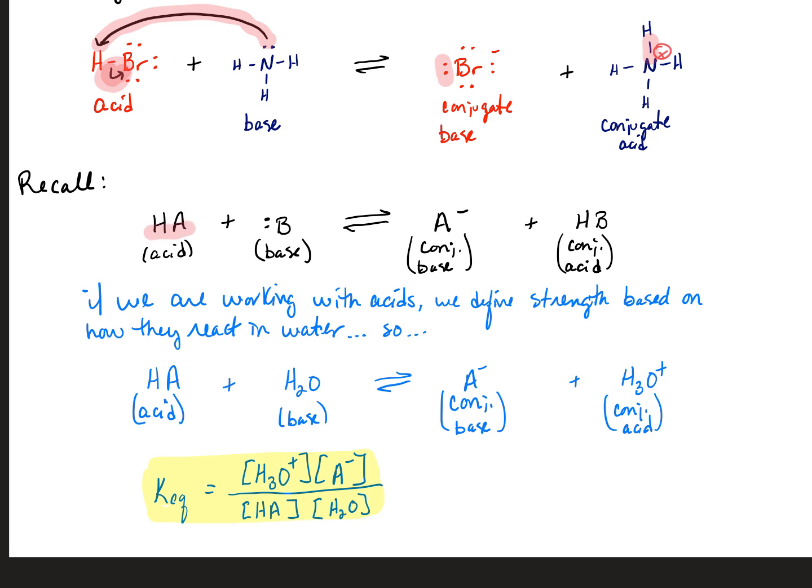So if we look at an overall reaction, we can say that if we have an acid that I'm going to represent as HA and a base that I'm going to represent as just B, the acid is going to form the conjugate base, A-, and the base is going to form the conjugate acid, which may have a positive charge.